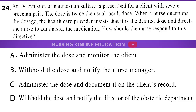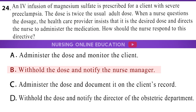Question 24. Infusion of magnesium sulfate is prescribed for a client with severe preeclampsia. The dose is twice the usual adult dose. When a nurse questions the dosage, the healthcare provider insists that it is the desired dose and directs the nurse to administer the medication. How should the nurse respond? A. Administer the dose and monitor the client. B. Withhold the dose and notify the nurse manager. C. Administer the dose and document it on the client's record. D. Withhold the dose and notify the director of the obstetric department. The answer is option B: Withhold the dose and notify the nurse manager.